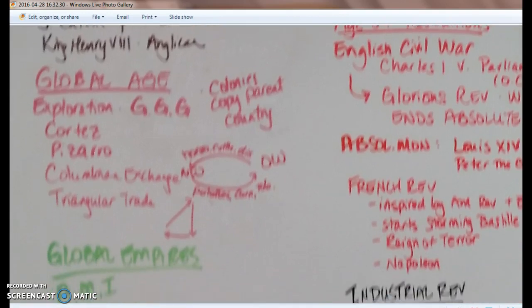The Global Age is exploration. Remember your causes: God, glory, gold, and that the colonies are going to copy their parent country. Cortes conquers the Aztecs; Pizarro conquers the Inca Empire — both are Spanish. Magellan is Portuguese and circumnavigates the world. Sir Francis Drake is the first Englishman to circumnavigate the world. Vasco da Gama goes down around the tip of Africa to India, setting up colonies that make Portugal very rich. Prince Henry funds these voyages but never goes himself. Look over your charts of the Columbian Exchange and the Triangular Trade.